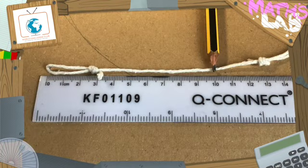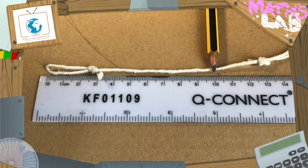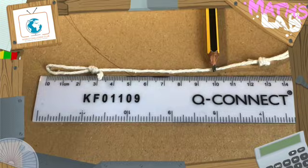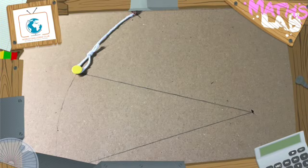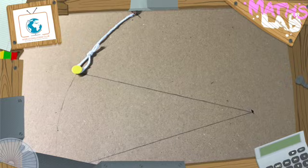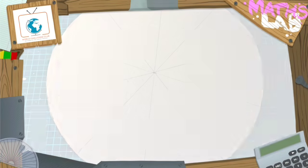To make our trundle wheel more accurate, we should mark every 10 centimeters around the circumference. Make another piece of string 10 centimeters long. You can use your 10 centimeter string to divide the 100 centimeter circumference into 10 segments.